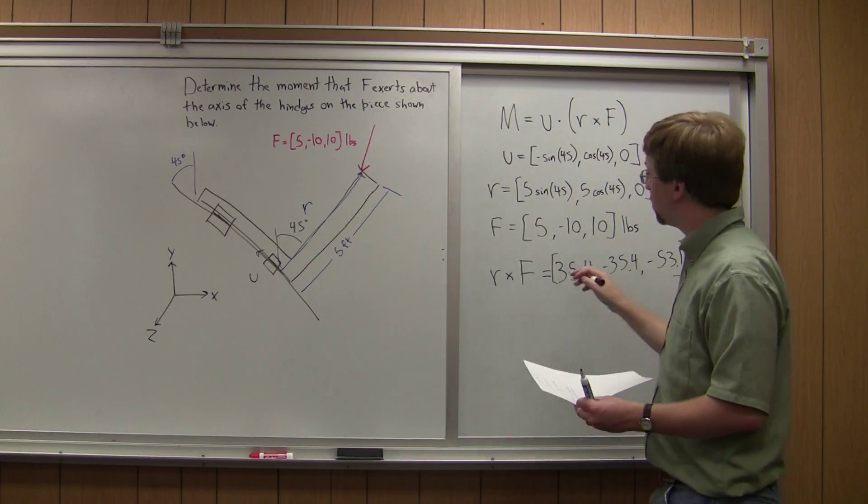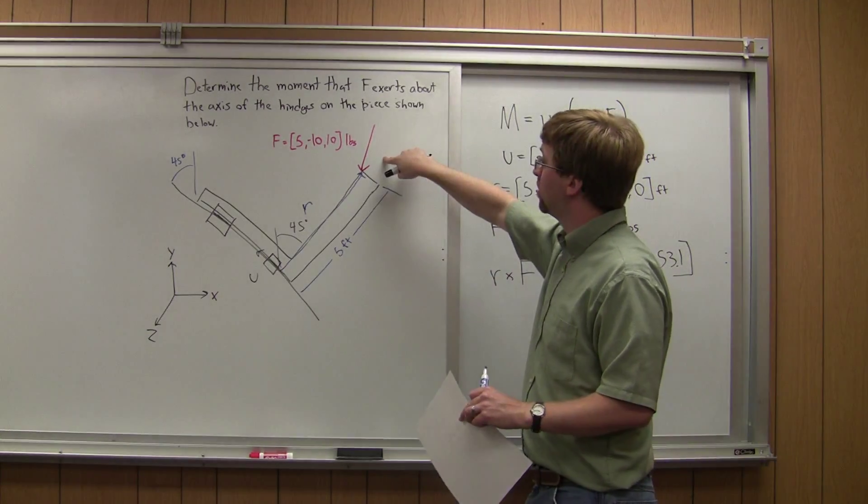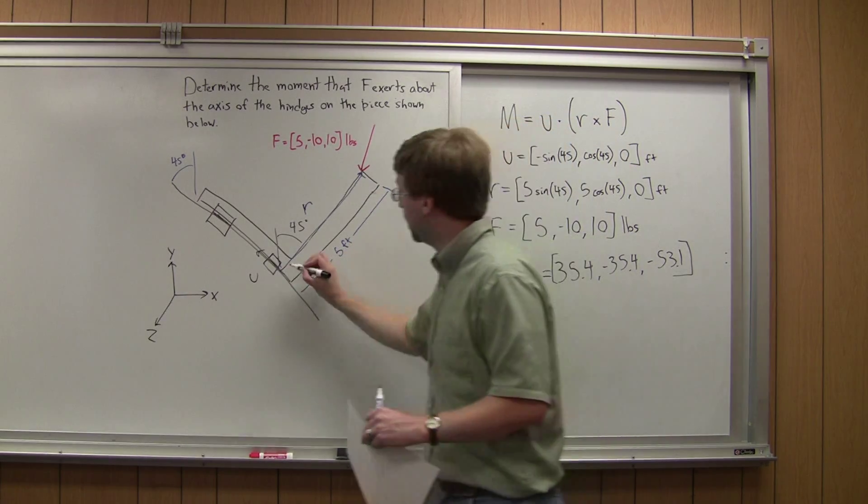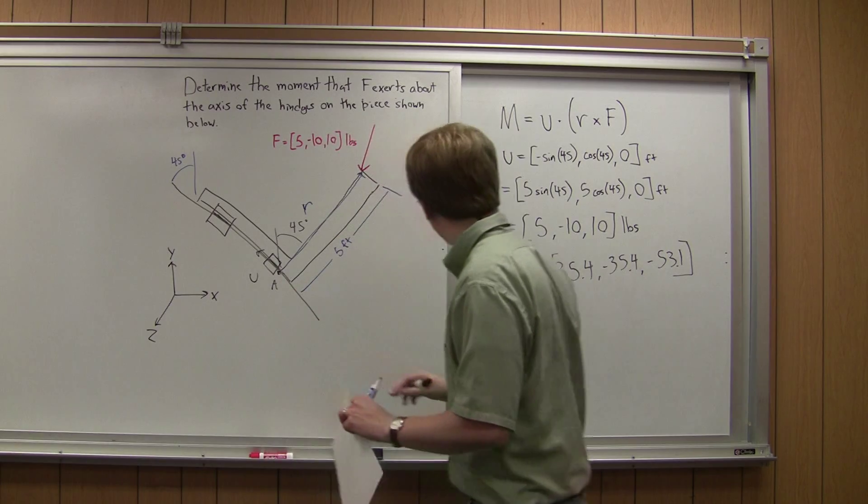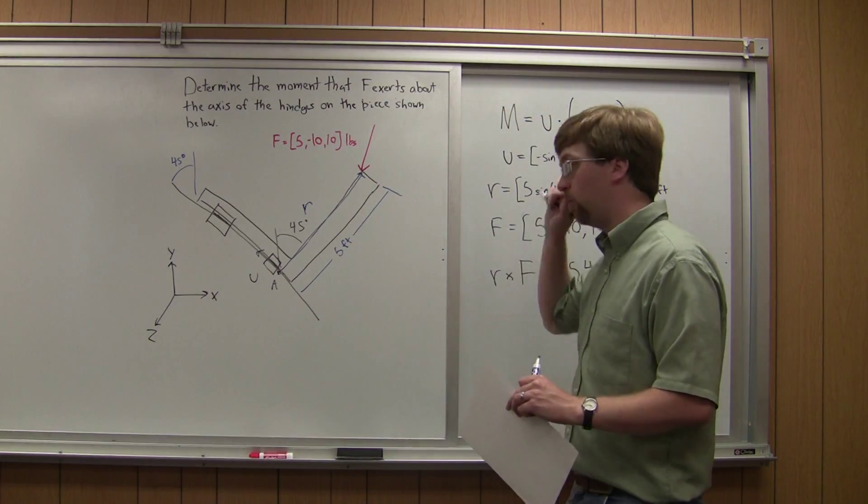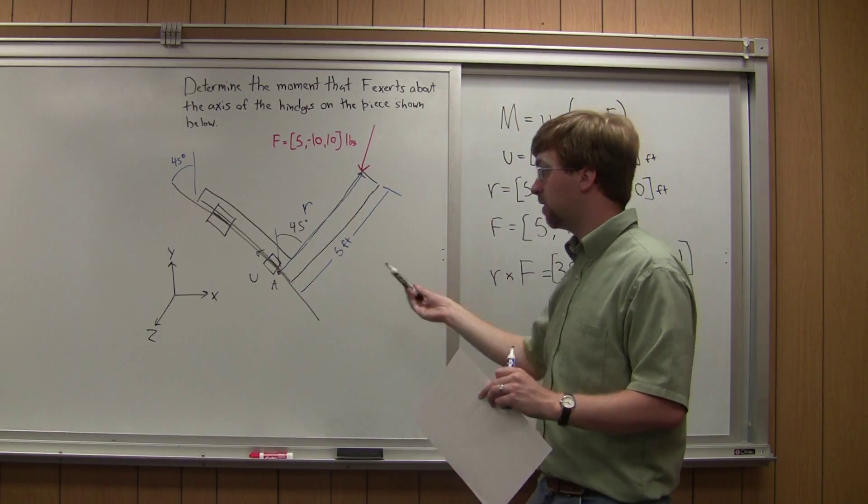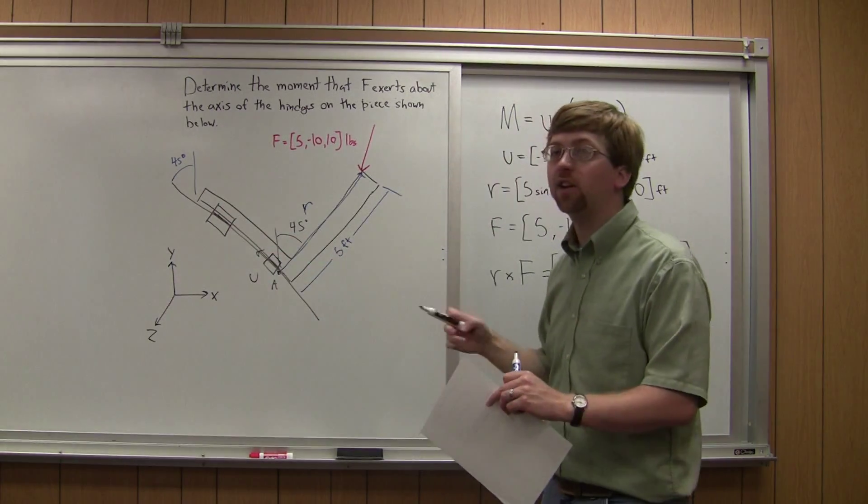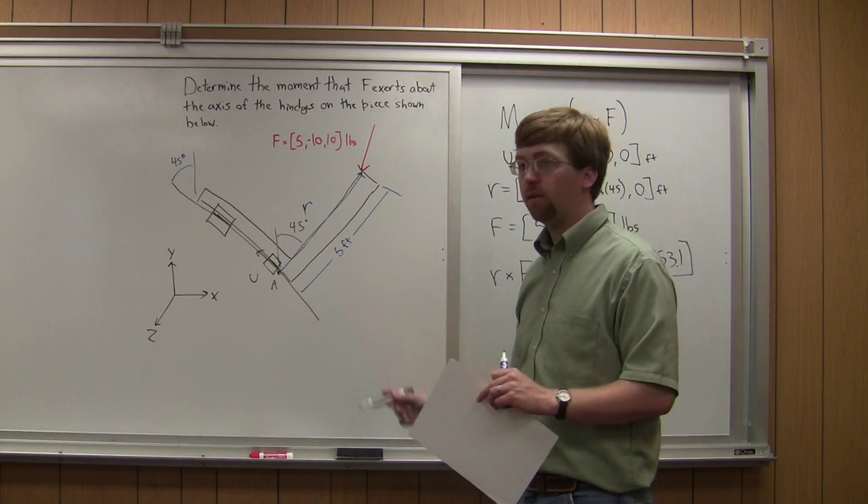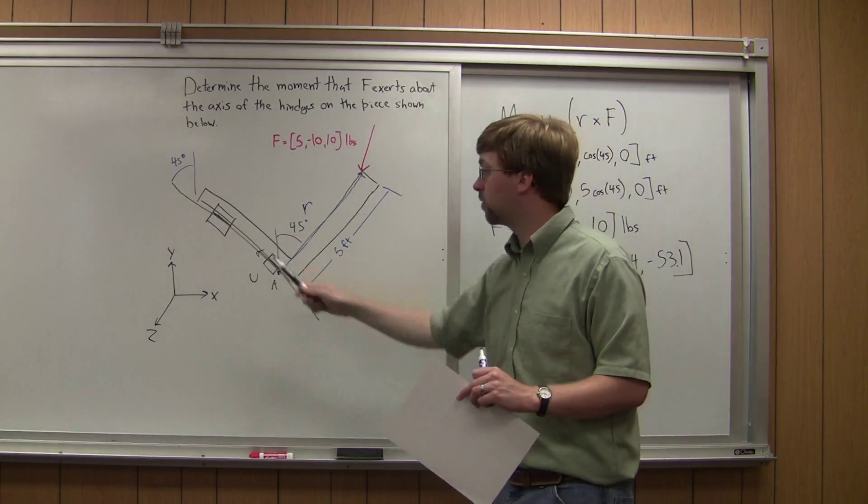And so this is the moment vector that this force exerts around this point right here. I'm going to call that point A. And so we want to find, that's not necessarily going to line up with our axis of rotation, so we want to find the component of that moment vector that's actually going in the direction of U.